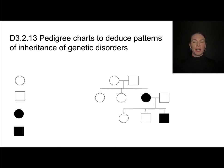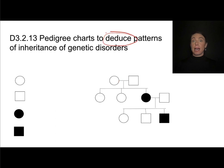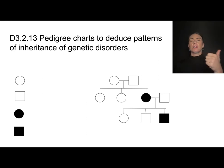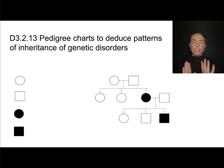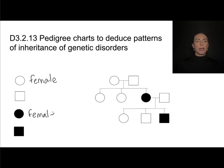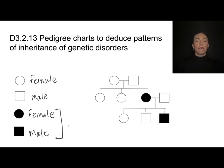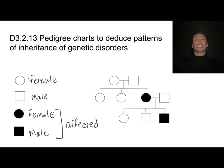Part of analyzing inheritance patterns is looking at pedigree charts. We use these pedigree charts to deduce — meaning figure out — patterns of inheritance, such as the genotype of an individual or the nature of an allele, whether it's dominant, recessive, or sex-linked. Circles on a pedigree chart denote a biological female and squares are for males. A darkened circle or square means that individual is affected by a genetic disorder, while an open, non-shaded circle or square means they are not affected.